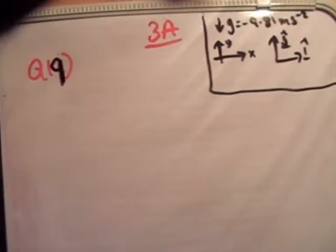So this one reads, the maximum height and the range of a projectile are equal. Find the angle of projection to the nearest degree.